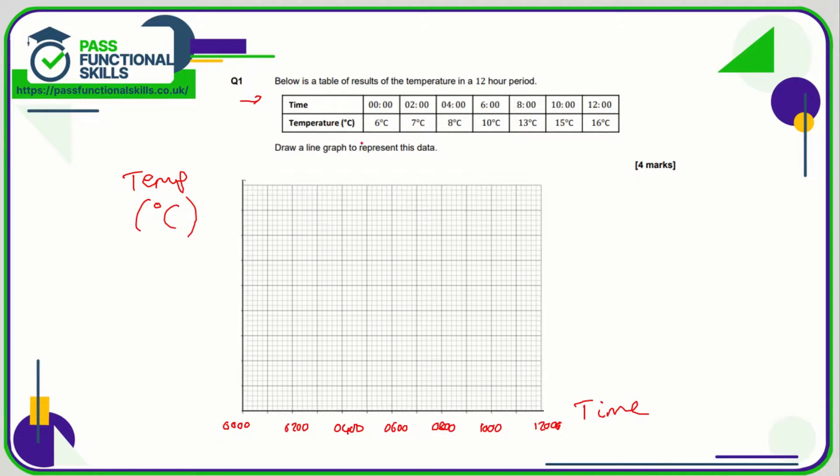The temperature goes from 6 to 16. We're going to start at zero and on the scale we want to go up to 16, maybe just a tiny bit beyond 16, but we're not going to do a scale going up to 100 because that would be fairly pointless. So let's go up in twos: 2, 4, 6, 8, 10, 12, 14, 16, 18, perfect.